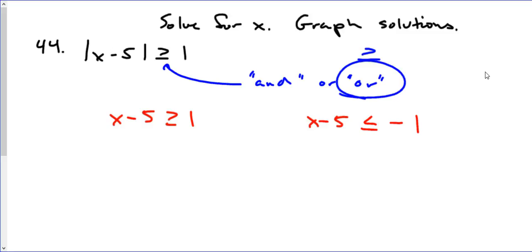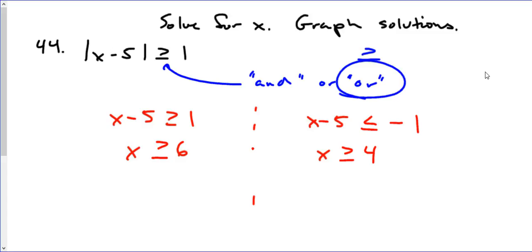After we create our two equations, we're going to solve them. In this case it's not too hard — we're going to have x is greater than or equal to 6 on one side, and on the other side x is going to be less than or equal to 4.